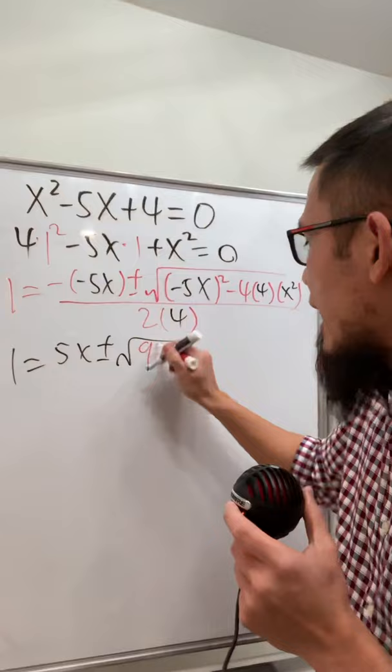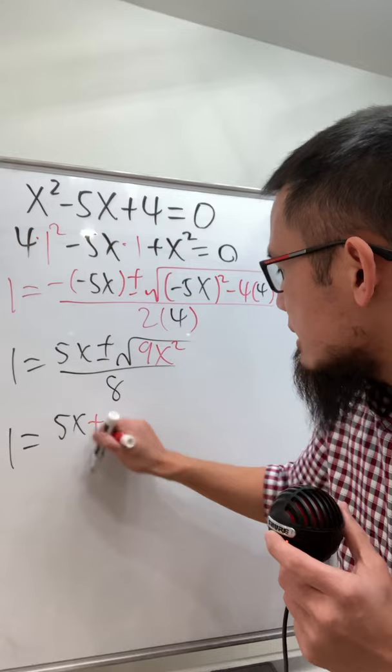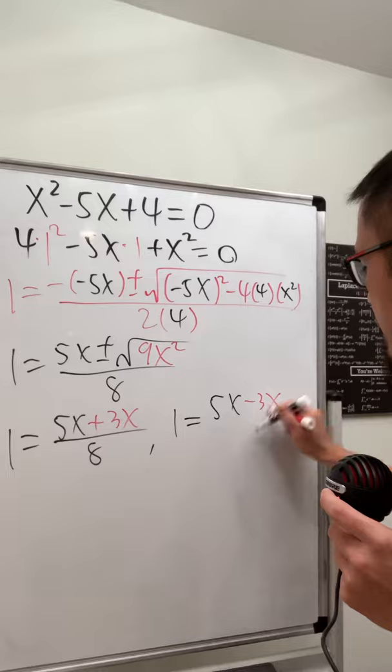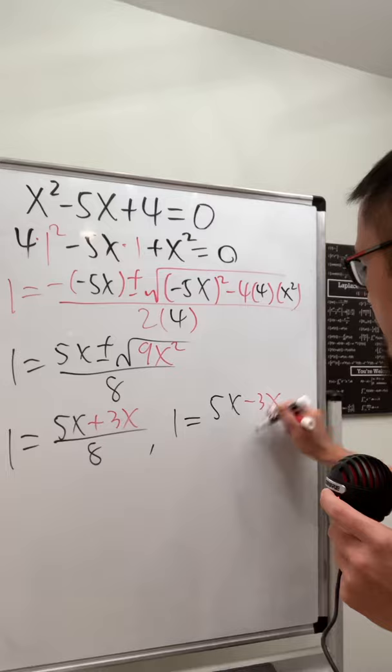So the first situation: 1 equals 5x plus 3x over 8. The other: 1 equals 5x minus 3x divided by 8. This gives x equals 1, and this gives x equals 4. Work them out, and that's the answer. Done!